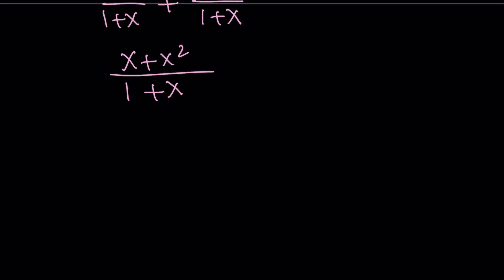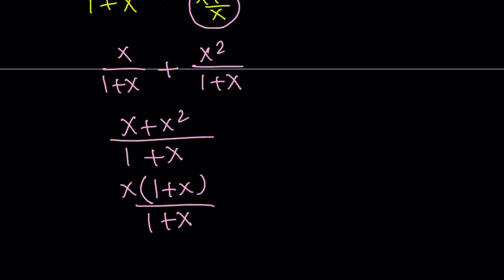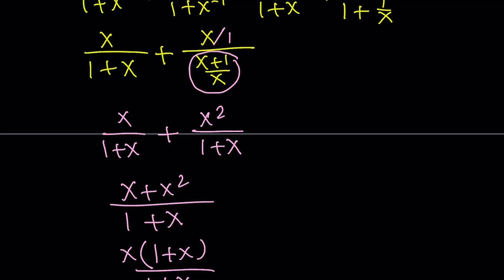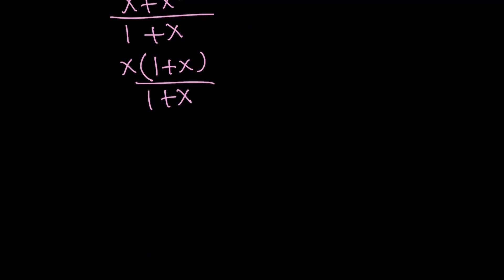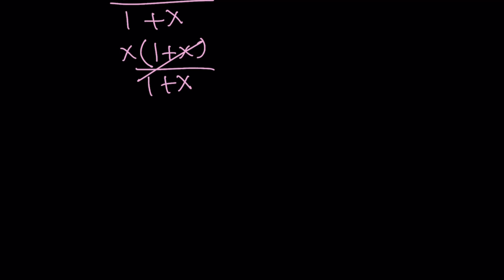So now, to simplify this, since x does not equal 0, I can actually factor out x here. Write this as x times 1 plus x divided by 1 plus x. Well, I should probably also say x does not equal negative 1 because then our expression will be undefined too. So x will be different from those values and 1 plus x is just going to cancel out and it's going to leave us with x.